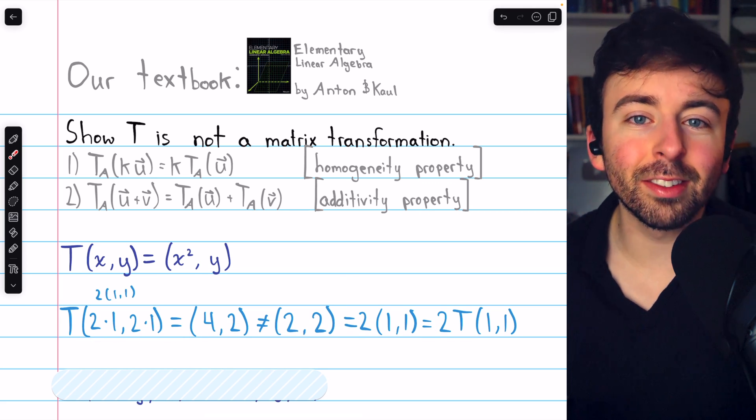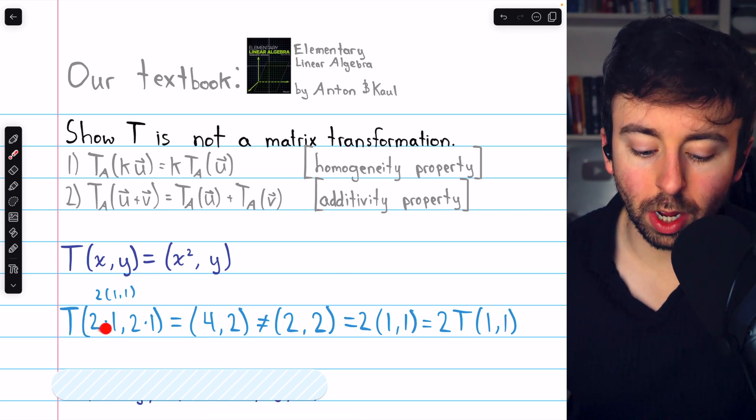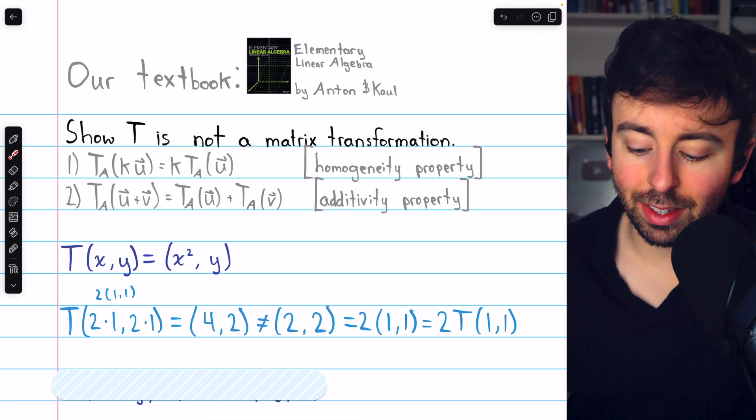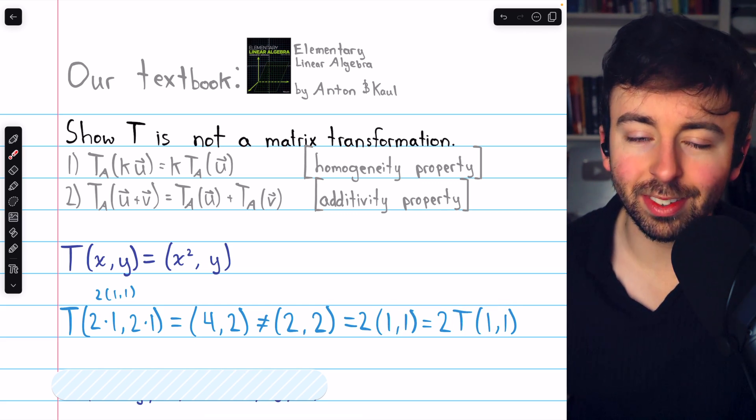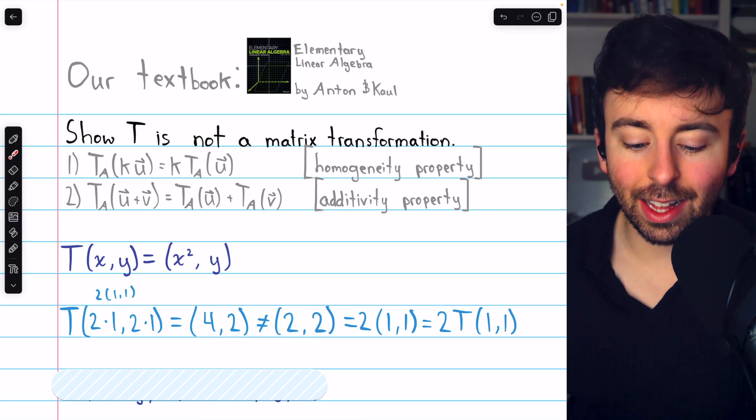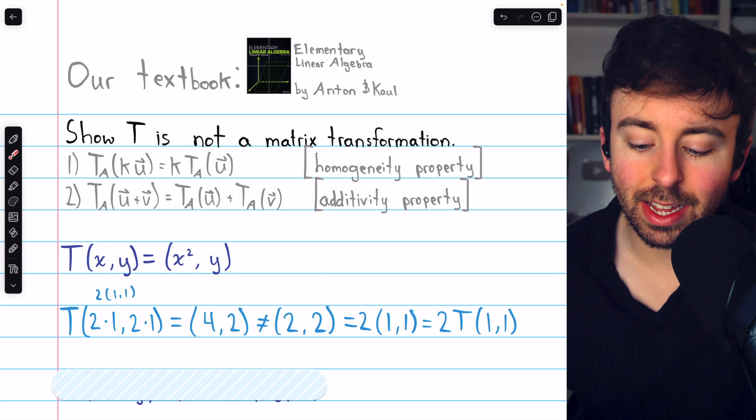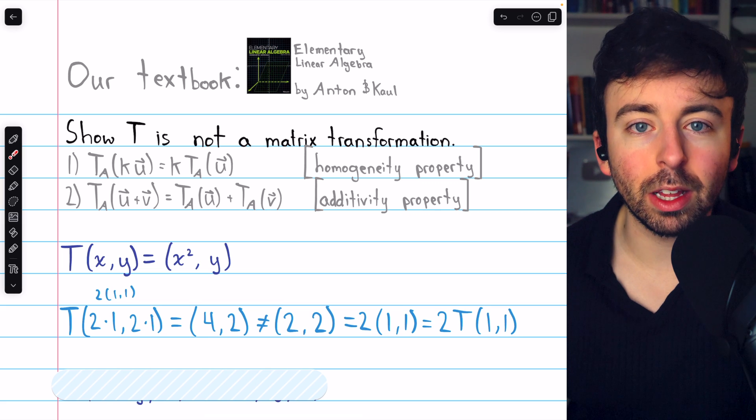But as you can see, this does not in fact satisfy that property. When we transform 2 times (1,1), the x component gets squared, so 4, and the y component doesn't change, so we have (4,2). But if we scale the image of (1,1), the image of (1,1) under the transformation is just (1,1). When we scale that by a factor of 2, we get (2,2). These things are not equal, hence this transformation T does not satisfy the homogeneity property, and so is not a matrix transformation.